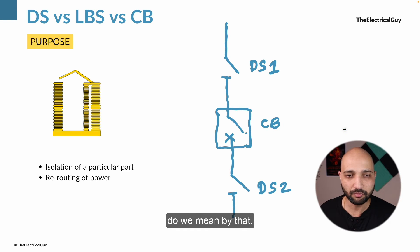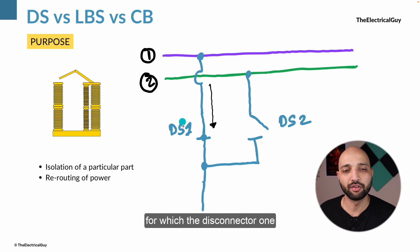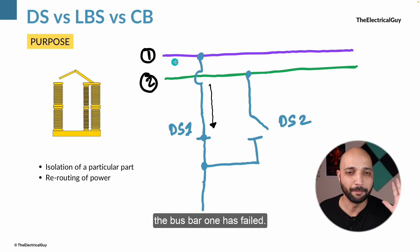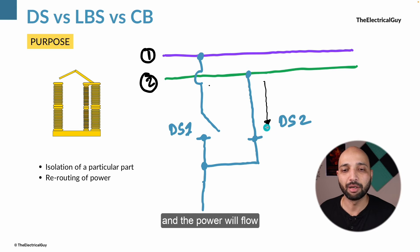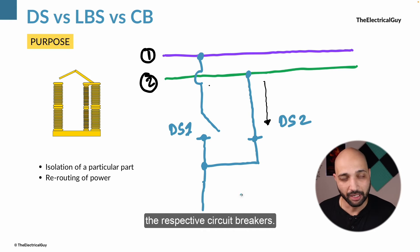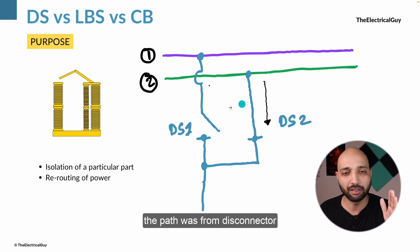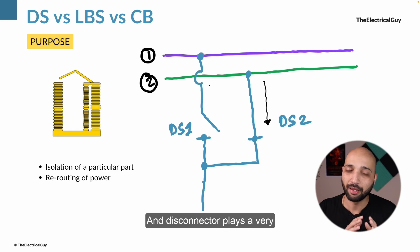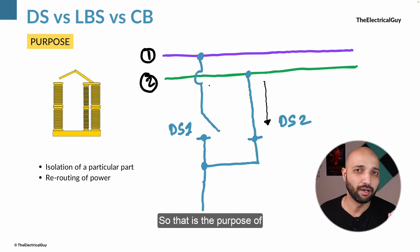The second purpose of disconnectors is rerouting of power. For example, with two busbars — busbar 1 and busbar 2 — if busbar 1 fails, I can open disconnector 1 and close disconnector 2 to reroute the power via busbar 2. This of course happens after opening the respective circuit breakers. Disconnectors play a very important role in substations for this purpose.